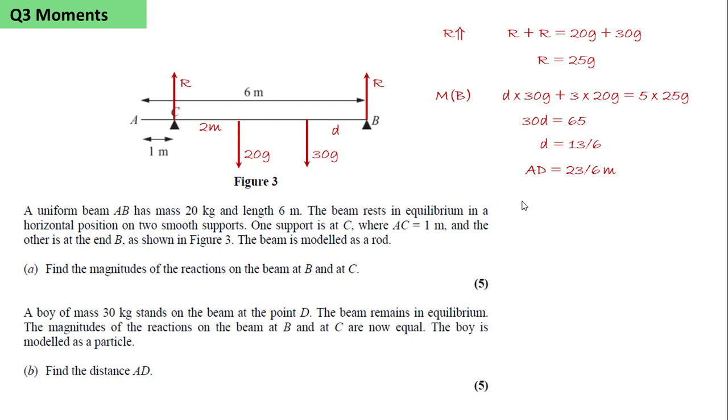That means that AD, as the length of AB is 36 sixths, AD will be 23 sixths of a metre.